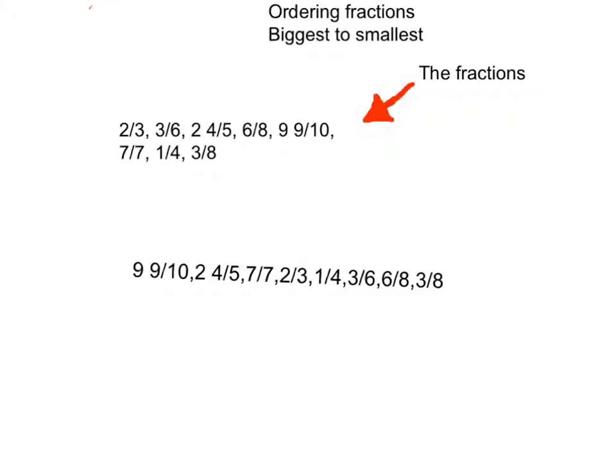And then it's 7 sevenths which is a whole, then 2 thirds, then 1 fourth, then 3 sixths, then 6 eighths, then 3 eighths.